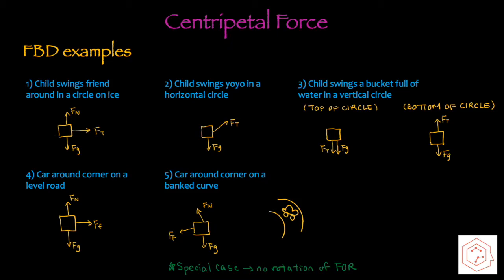The third scenario is a child swinging a bucket full of water in a vertical circle. At the top of the circle, this would correspond to any minimum, so minimum tension or speed. In this case, tension and gravity would both be acting downwards. On the other hand, at the bottom of the circle, gravity is still acting downwards, however tension is acting upwards.